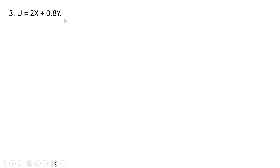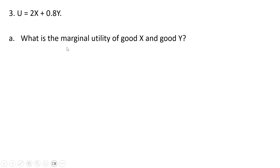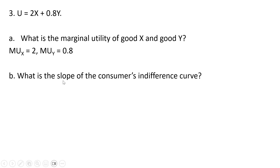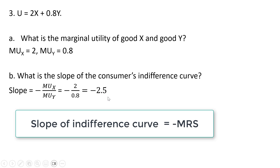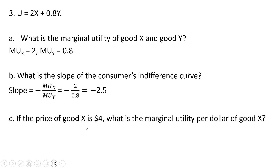Question 3. We have this utility function — it is a perfect substitutes utility function. The marginal utility of good x is just the coefficient in front of the x term, which is 2. The marginal utility of good y is just 0.8, the coefficient in front of the y term. The slope of the consumer's indifference curve is minus the marginal utility of good x over the marginal utility of good y: minus 2 divided by 0.8 is minus 2.5. This is a straight downward sloping indifference curve. If the price of good x is $4, the marginal utility per dollar of good x is 2 divided by 4, which equals 0.5. Spending one more dollar on good x increases utility by half a unit.